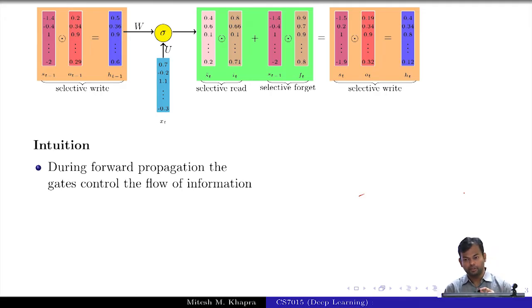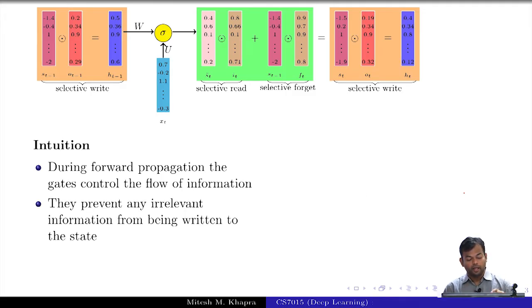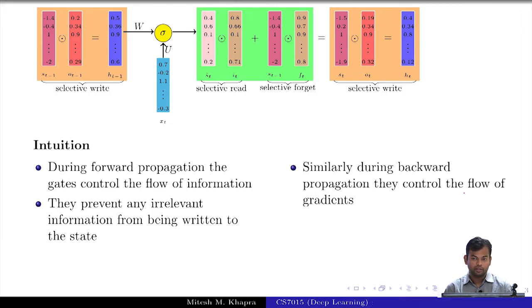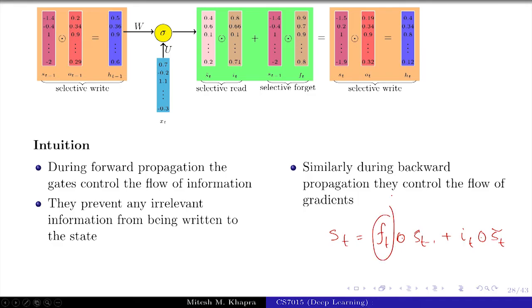During forward propagation, the gates control the flow of information. The gate decides how much of ST minus 1 should be passed to ST. They prevent any irrelevant information from being written to the next state. Similarly, during back propagation, the gates will regulate the flow of information. What I mean by that is that if at a certain state you have computed ST equals F_T into ST minus 1 plus I_T into S tilde T, this gate is actually deciding how much information flows in the positive direction. Suppose this gate value was 0.5, so only 0.5 of this information from ST has been carried on to ST minus 1.